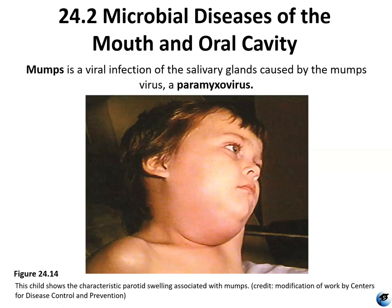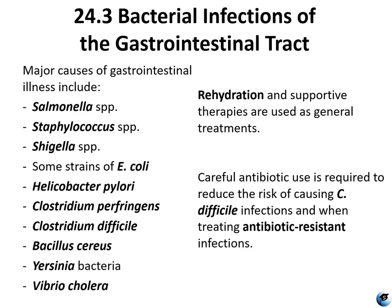Here is a short list of many common causes of gastrointestinal illness — the most common causes of foodborne illness, food poisoning, and other types of GI tract infections. These include Salmonella, Staphylococcus, Shigella, E. coli, Helicobacter, Clostridium, Bacillus, Yersinia, and Cholera. Treatment generally involves supportive therapies and antibiotics, but the biggest concern is dehydration from diarrhea, and sometimes IV fluids are necessary.